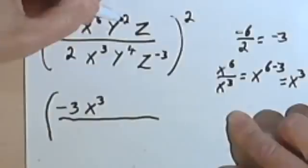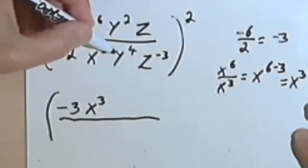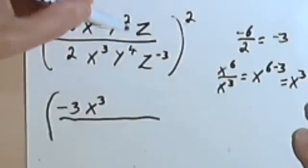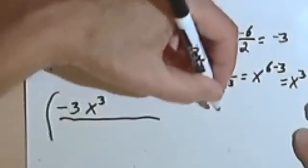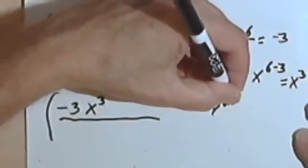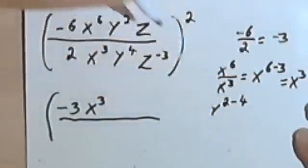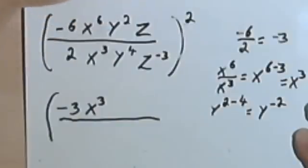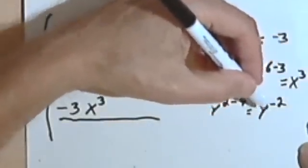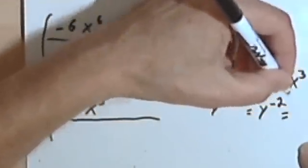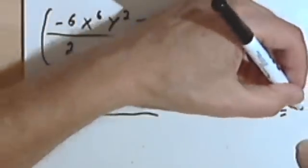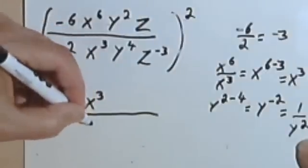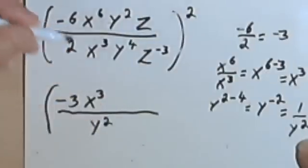I've got y squared over y to the 4th. Once again, I subtract the exponent in the denominator, which is 4, from the exponent in the numerator, which is 2. That gives me y to the 2 minus 4, which is y to the negative 2. I can immediately convert this to a positive exponent by putting it in the denominator, so I'll have 1 over y squared.